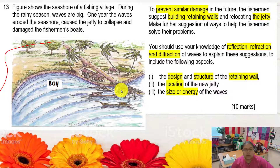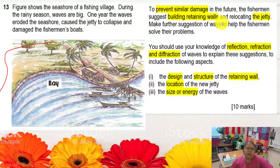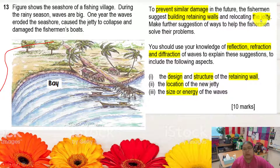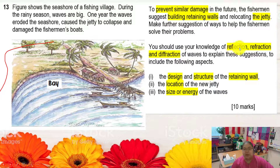When wave energy concentrates at the gap, the wave pressure becomes very strong, eroding the seashore and damaging the fishing village. To prevent similar damage in the future, the fishermen suggest building a retaining wall and relocating the jetty. The question asks for further suggestions using knowledge of refraction and diffraction — diffraction being the next lesson topic.